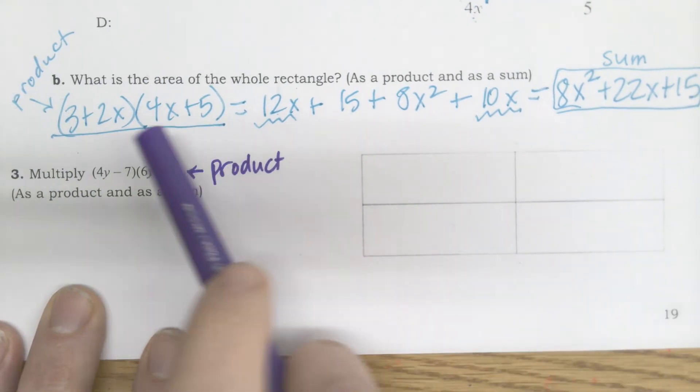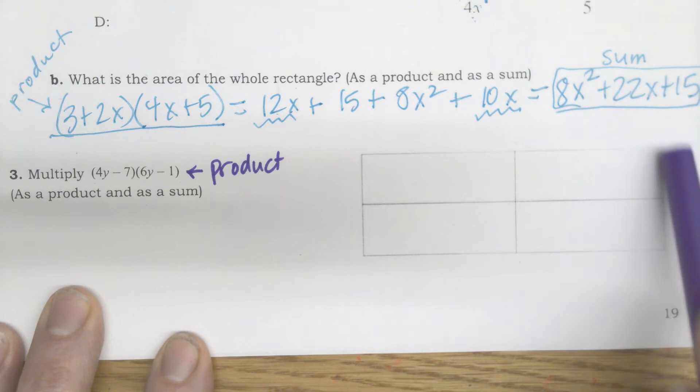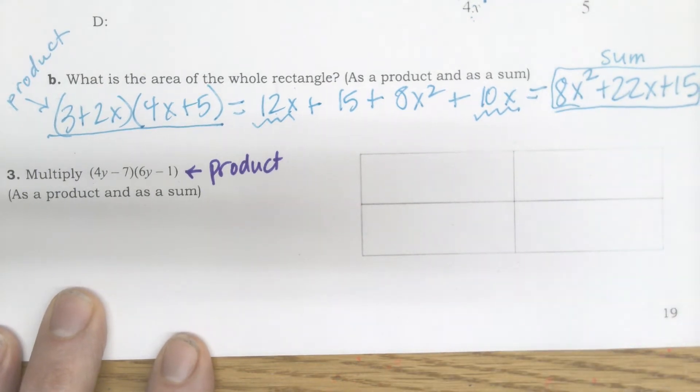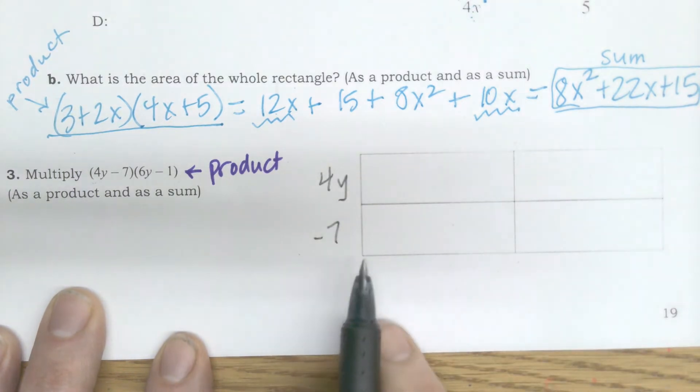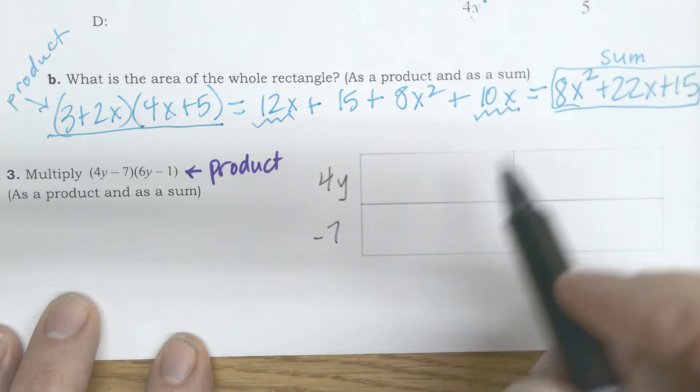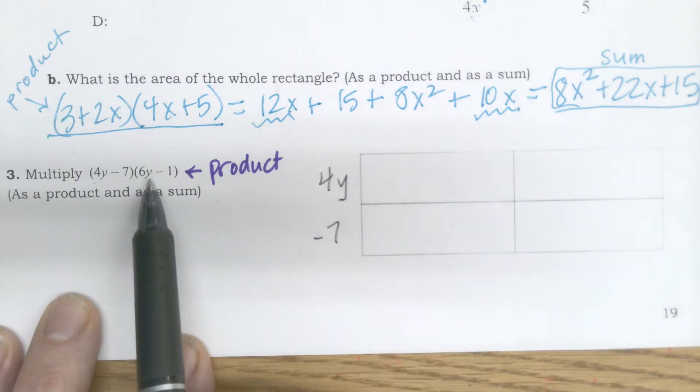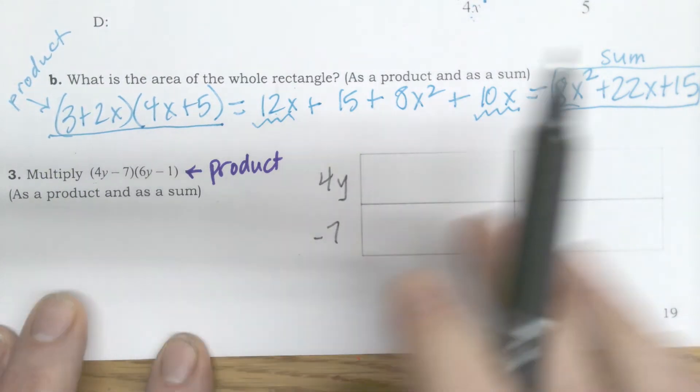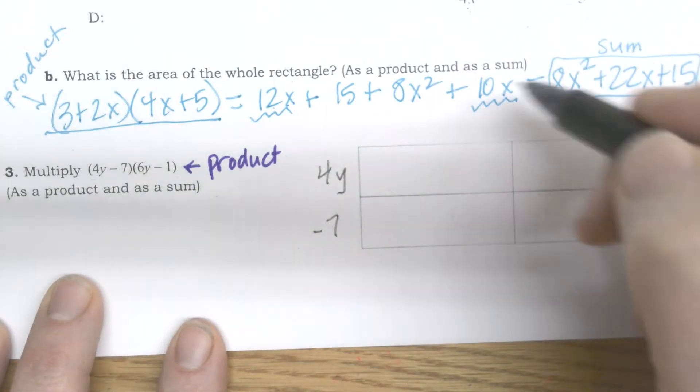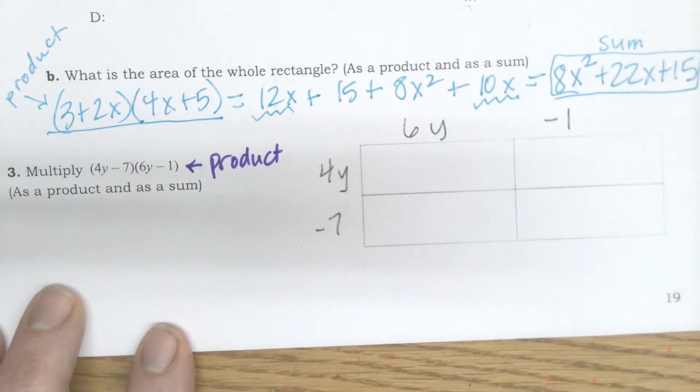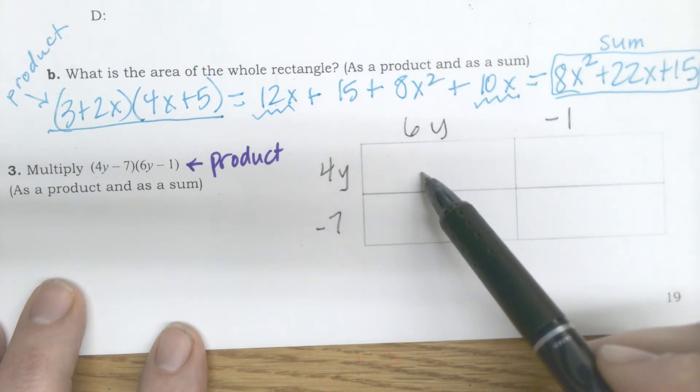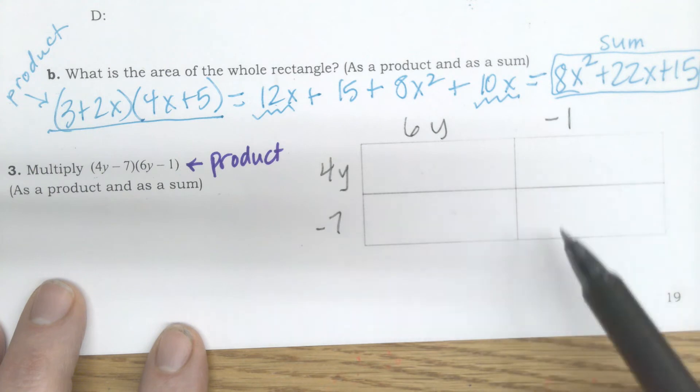When I'm trying to make this connection from the product to this box, I write these values on each side. So 4y minus 7, I'll put it on this side, making it a negative 7. This next one, 6y minus 1. They put theirs along the bottom, but I like to put mine along the top. I think it's easier for me to read, and it puts them in order from highest power to lowest power.